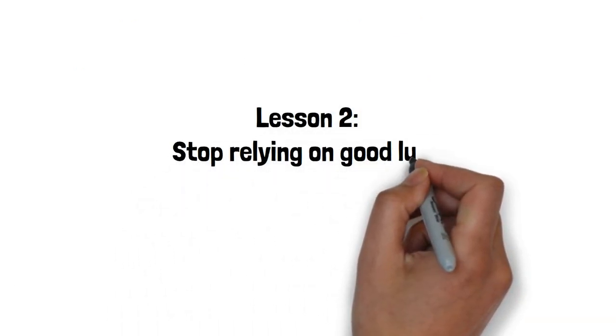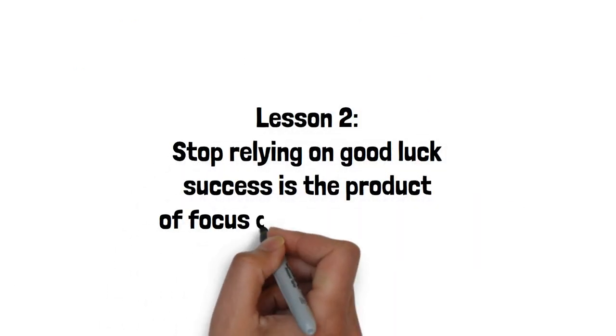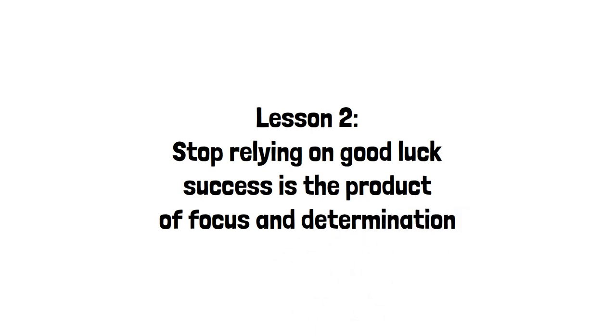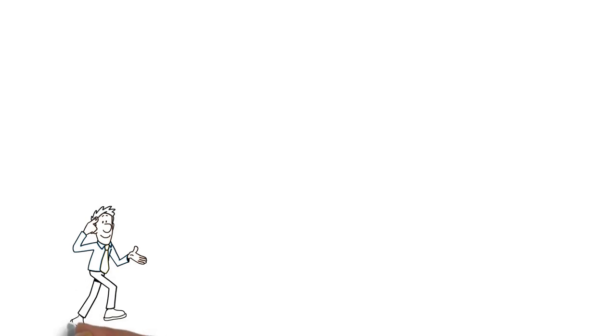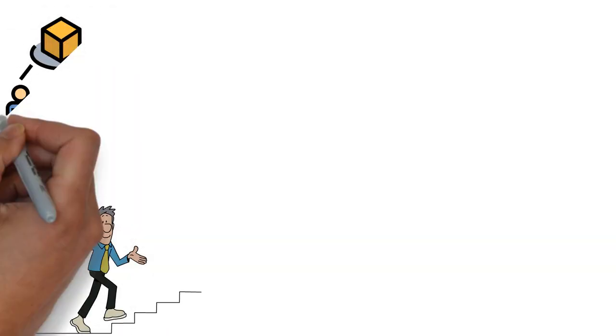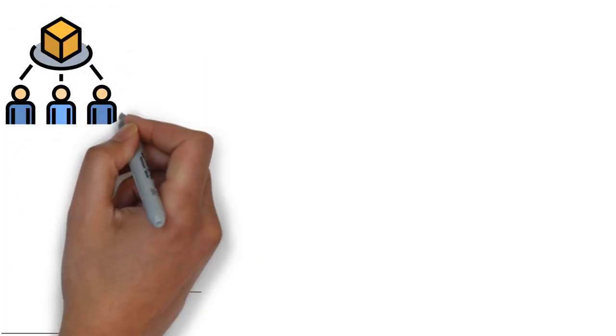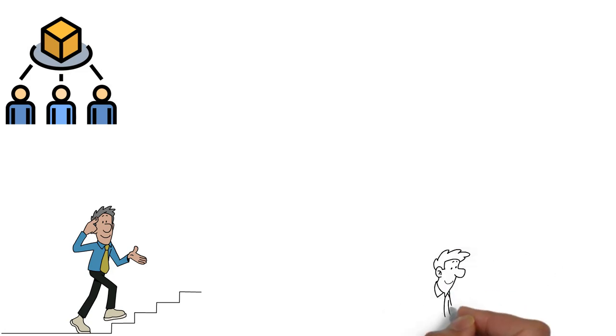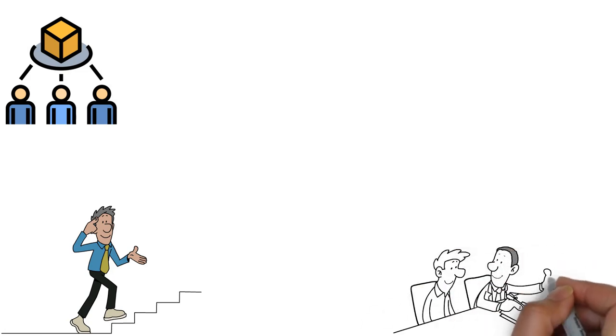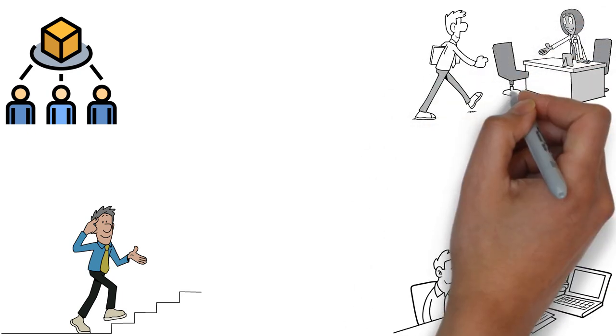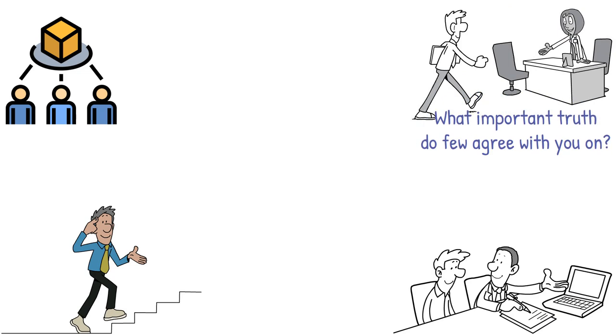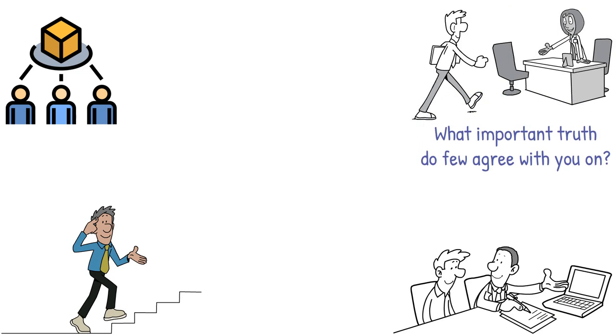Lesson 2: Stop relying on good luck. Success is the product of focus and determination. Achieving vertical progress is challenging since it requires envisioning something novel that meets a future demand. As a startup founder, predicting the future entails critically analyzing the present. Thiel emphasizes this insight so much that he asks interviewees, 'What important truth do few agree with you on?' This identifies thinkers who can reshape the future.